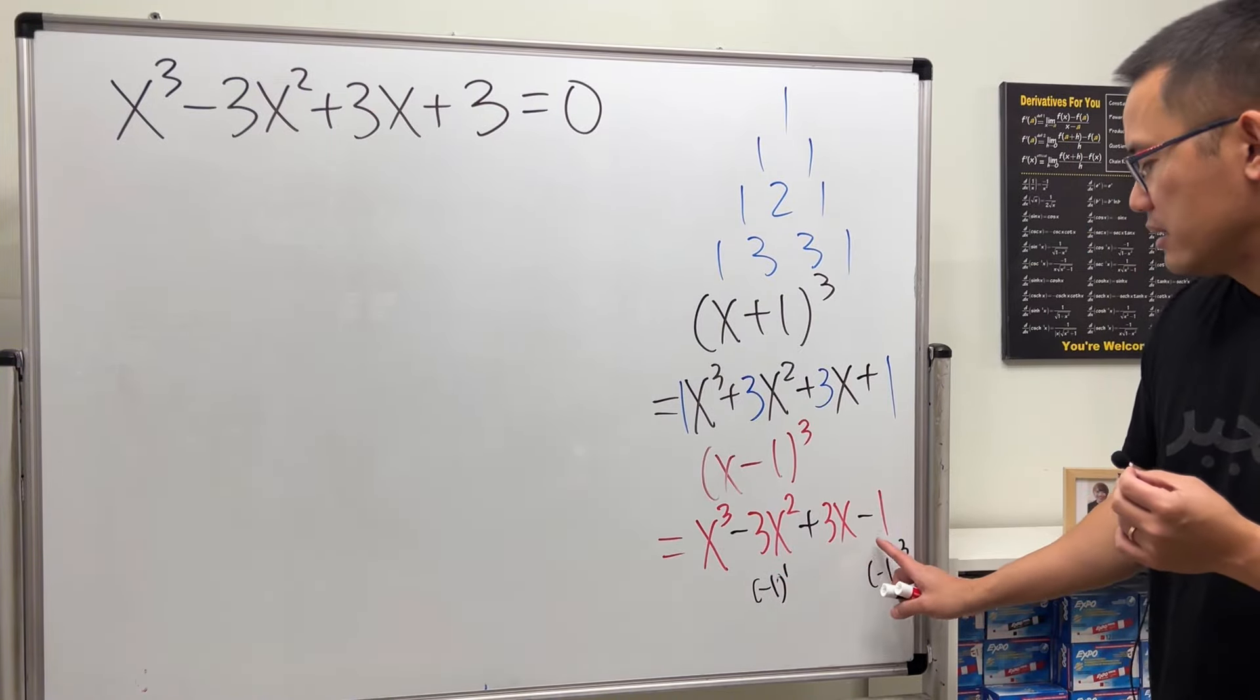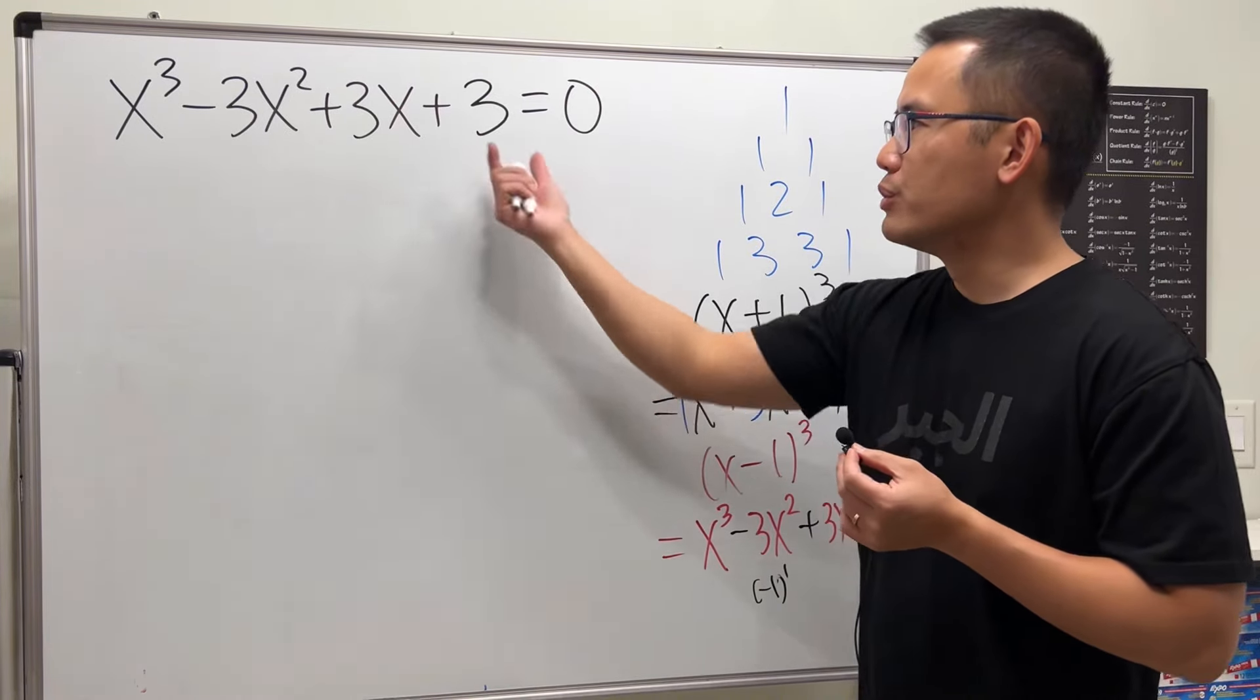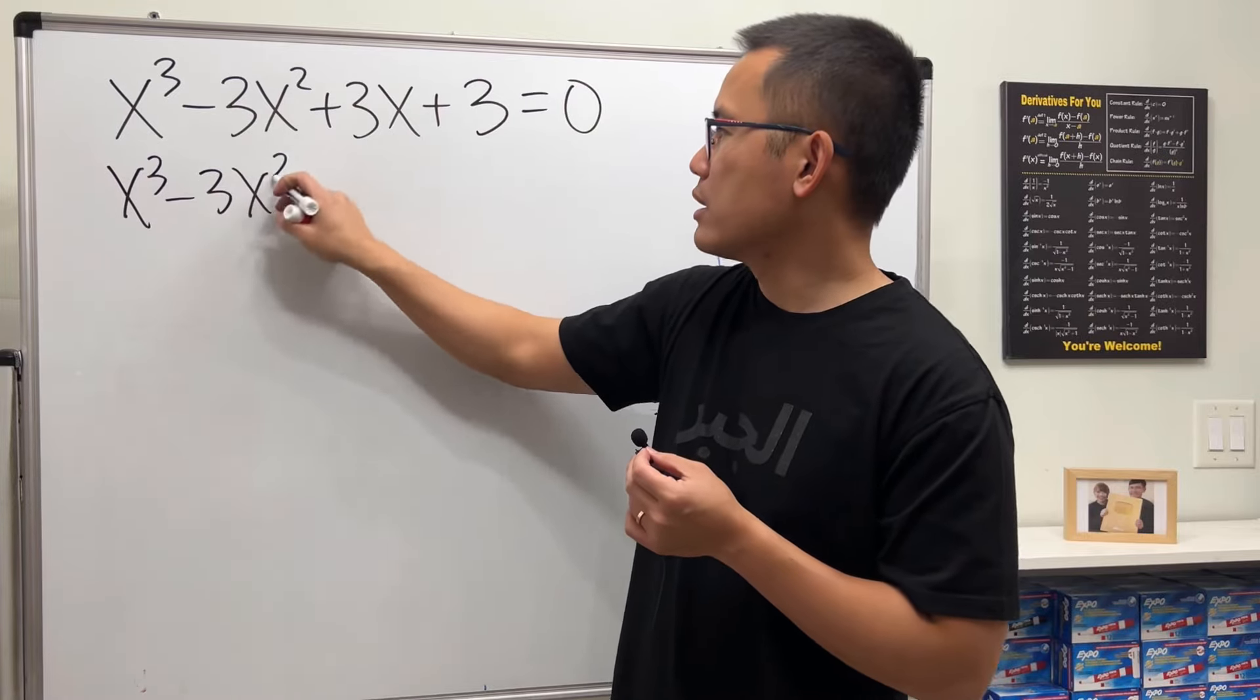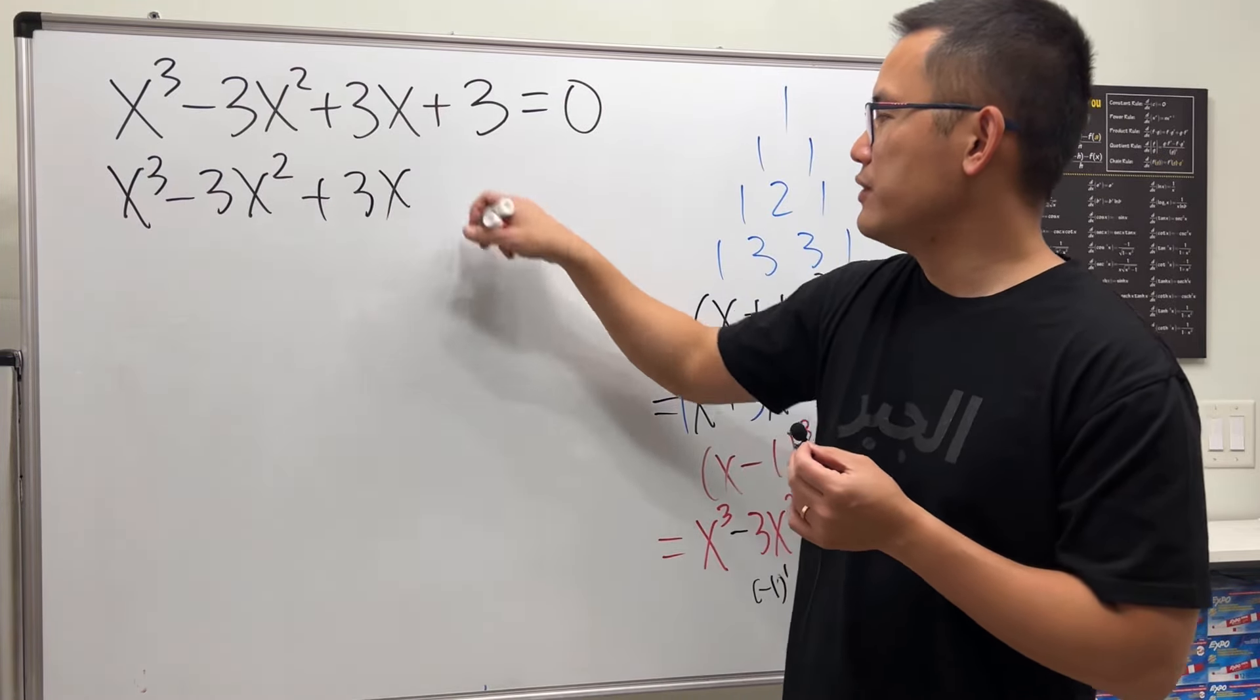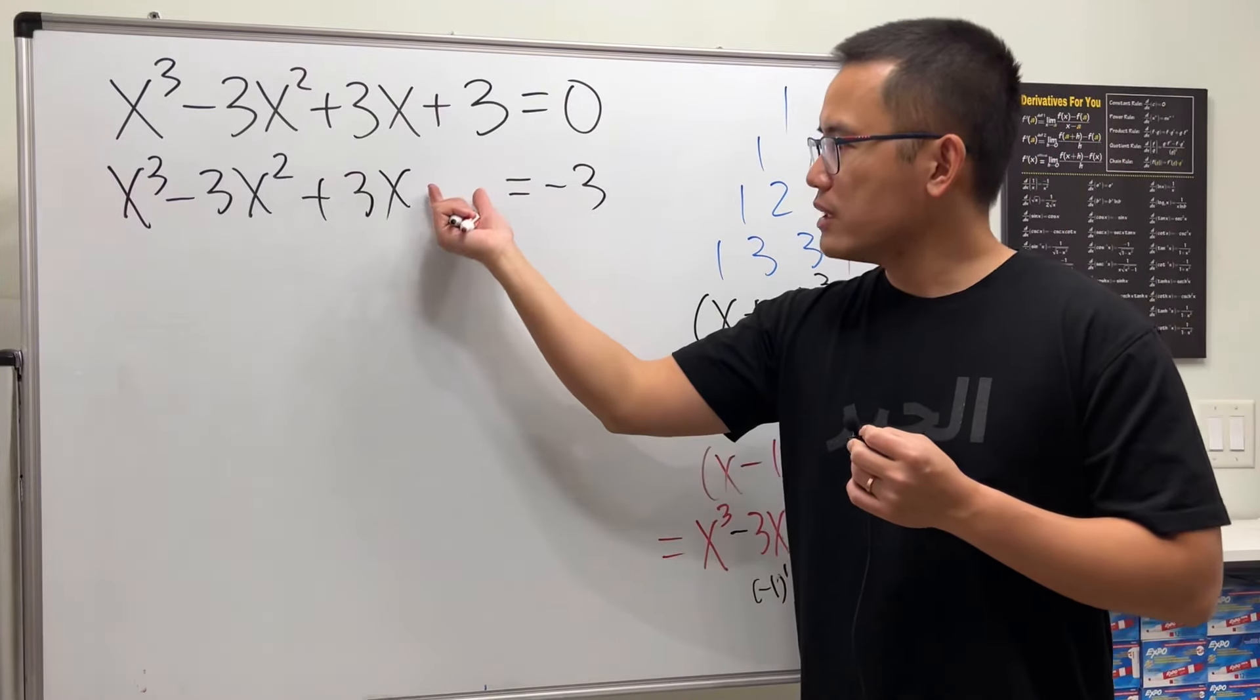They are almost the same but this is minus 1, this is plus 3. Don't worry, let's move this to the other side, so x³ - 3x² + 3x, leave a space and we get negative 3 on the right hand side.